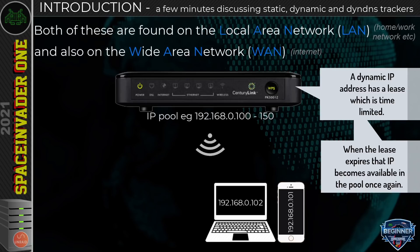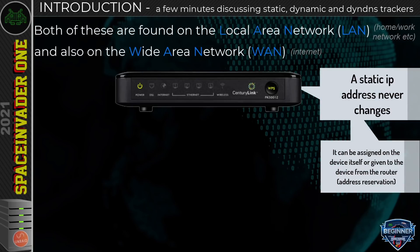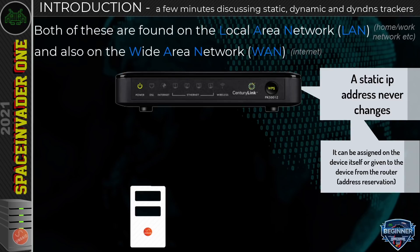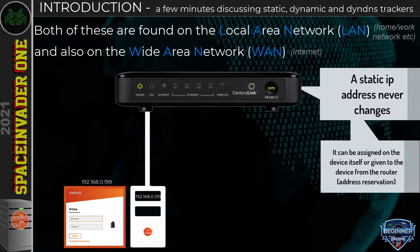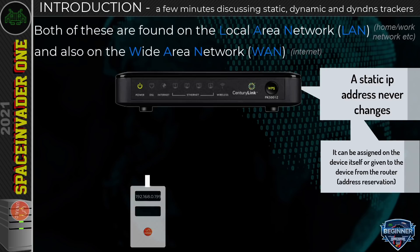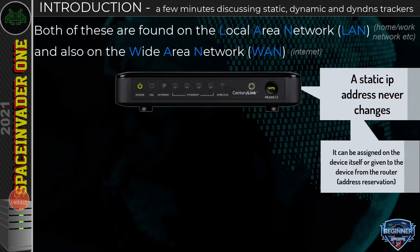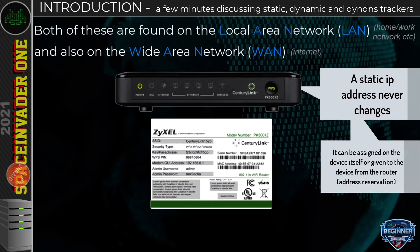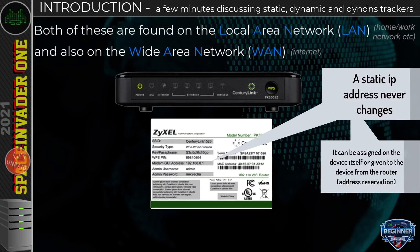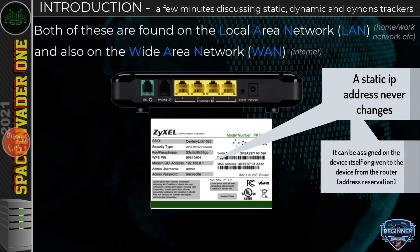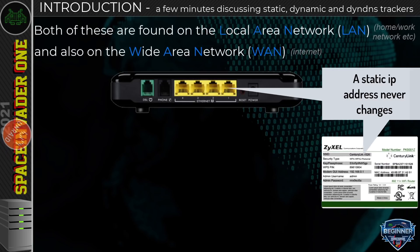That's why dynamic IP addresses change — they're shared between multiple devices. A static IP address never changes at all. Anyone with an Unraid server will have set a static IP address for it, because we need it to always be the same — for example, if we want to go to Unraid's web UI we always want it at the same address. In fact, everyone has at least one static IP: your router has a static IP on the local network side.